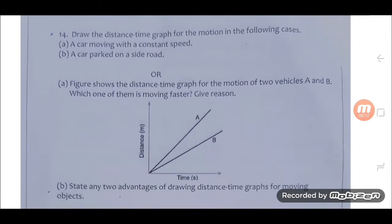14. Draw the distance time graph for the motion in the following cases. A. A car moving with a constant speed. B. A car parked on a side road.